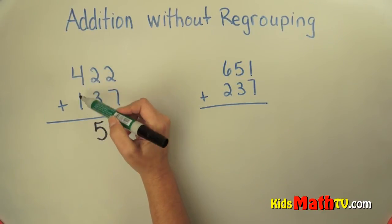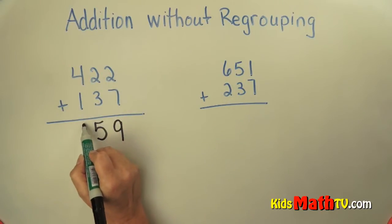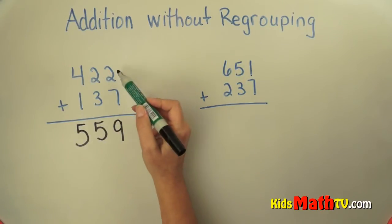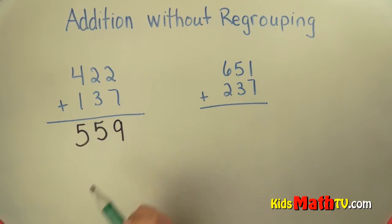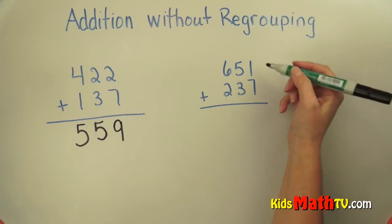...the hundreds. Four hundreds plus one hundred is five hundred. So 422 plus 137 is 559. Here's another example. Again, we...